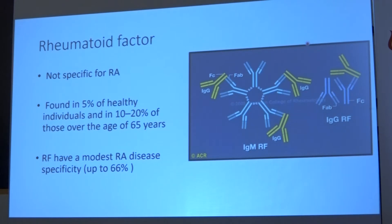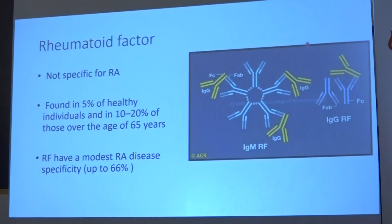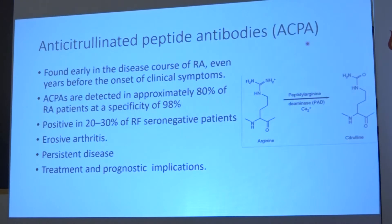Autoimmunity plays a key role in rheumatoid arthritis. When we talk about autoimmunity, we talk about autoantibodies. The famous antibody in rheumatoid is rheumatoid factor, which has been tested for years. It is not specific for rheumatoid arthritis — its specificity is around 60%. It is found in 5% of healthy individuals, and in 10 to 20% of people above age 65 who test positive without symptoms. It has both low sensitivity and low specificity.